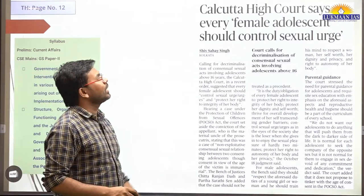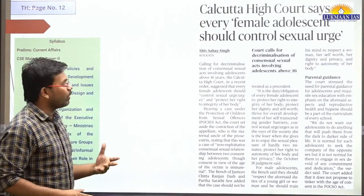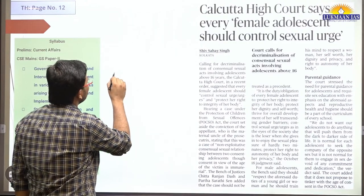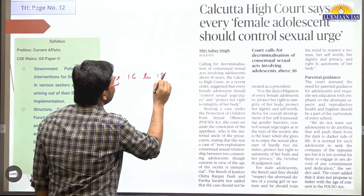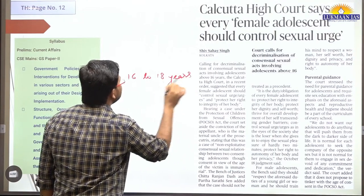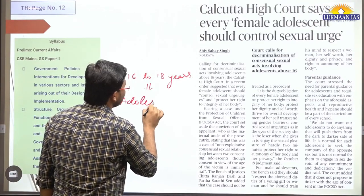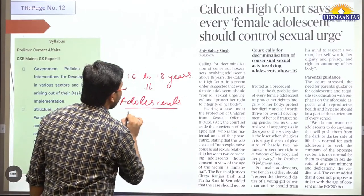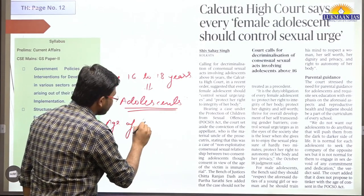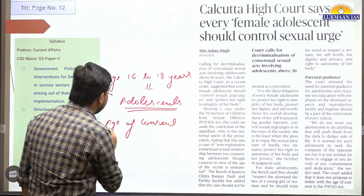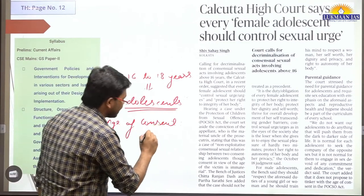The final topic covers a Calcutta High Court observation that every female adolescent should control sexual urges. This relates to the concept of age of consent — the age at which persons can willingly enter into a sexual relationship. In India, under the law, people between 16 and 18 years of age are considered adolescents, and the age of consent has specific legal significance under Indian law.